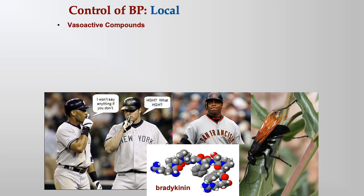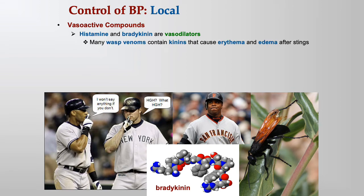Local control of blood pressure involves vasoactive compounds. Histamine and bradykinin are vasodilators — they decrease peripheral vascular resistance and therefore decrease blood pressure. Wasp venoms contain kinins that cause erythema and edema after stings by causing vasodilation, which brings more blood to the area, making it red and swollen. Vasodilation from kinins would also lower systemic blood pressure.